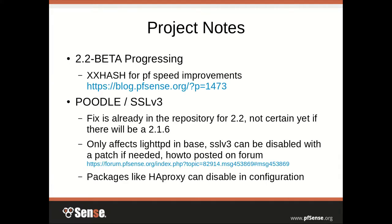First up is our project notes. Version 2.2 is still in beta, but it's progressing pretty quickly. We did change out the hash algorithm in PF to xxHash for speed improvements. There's a link on the blog for more details, but it gives a pretty significant speed improvement in packet processing in PF, which everyone's looking forward to.